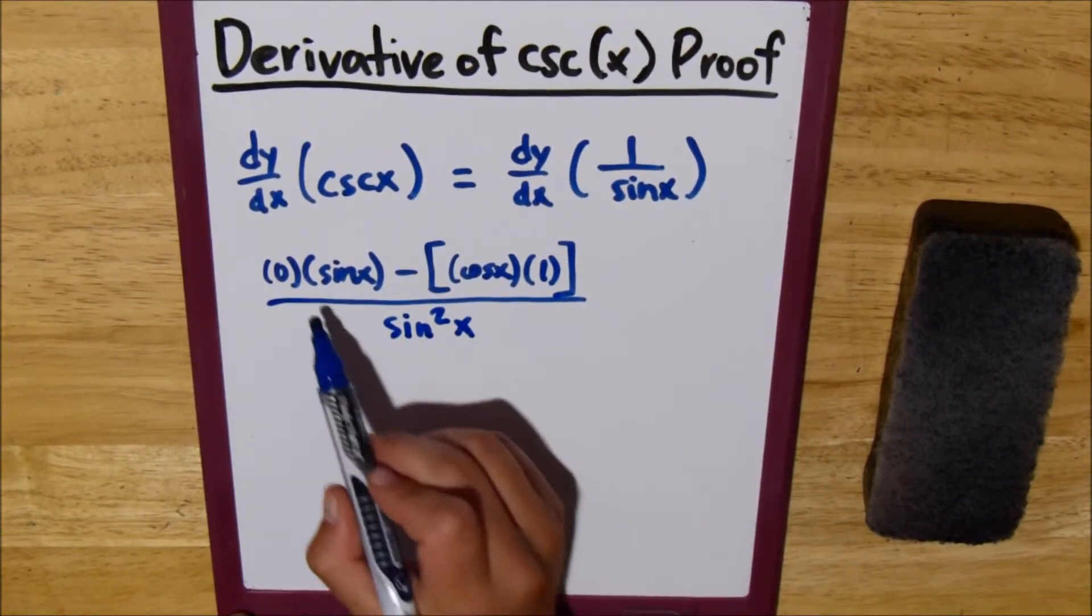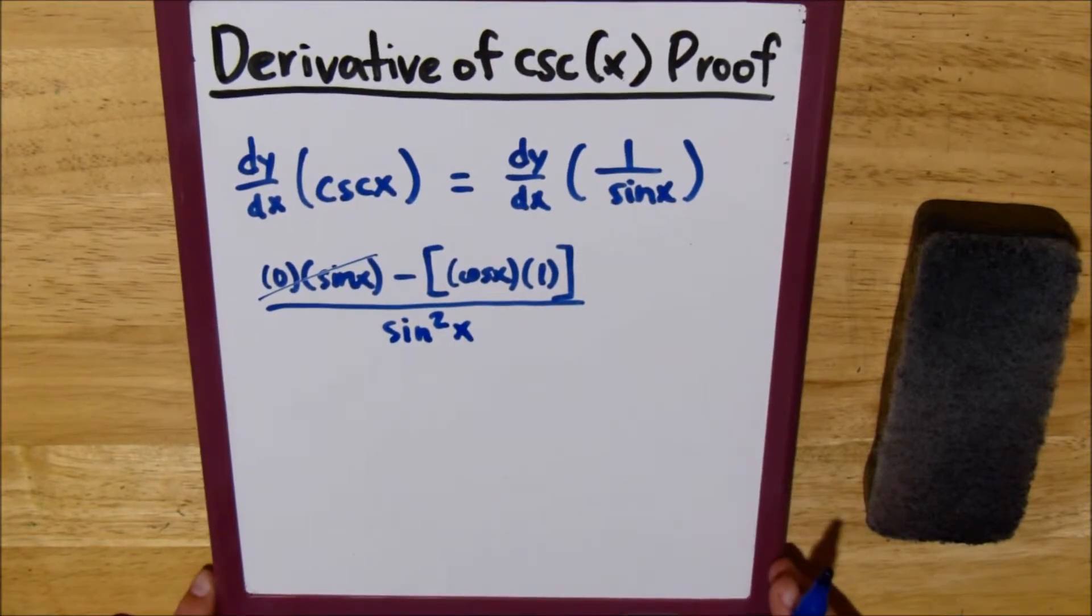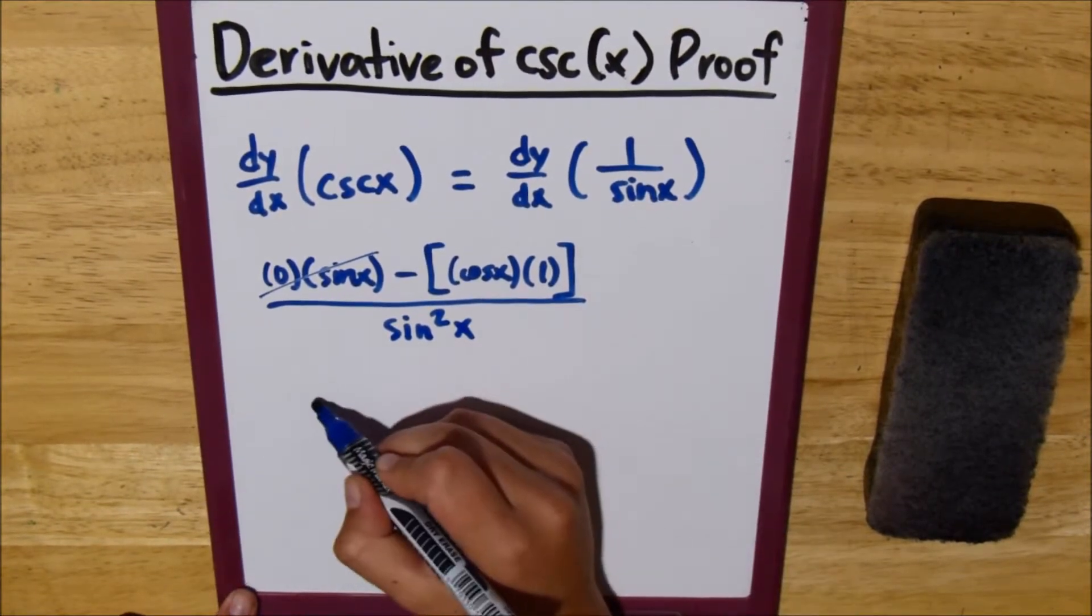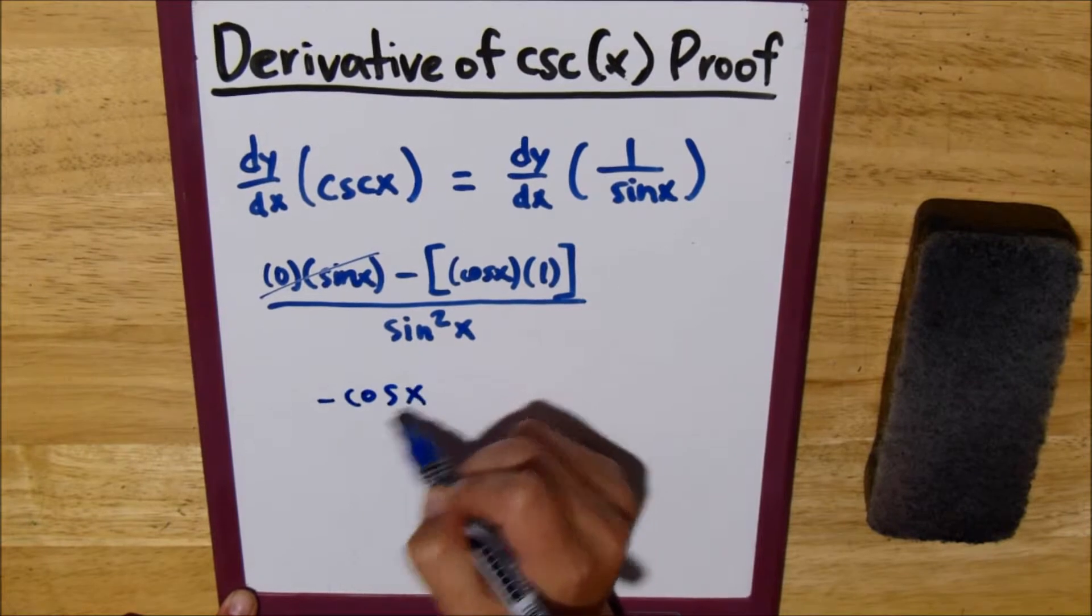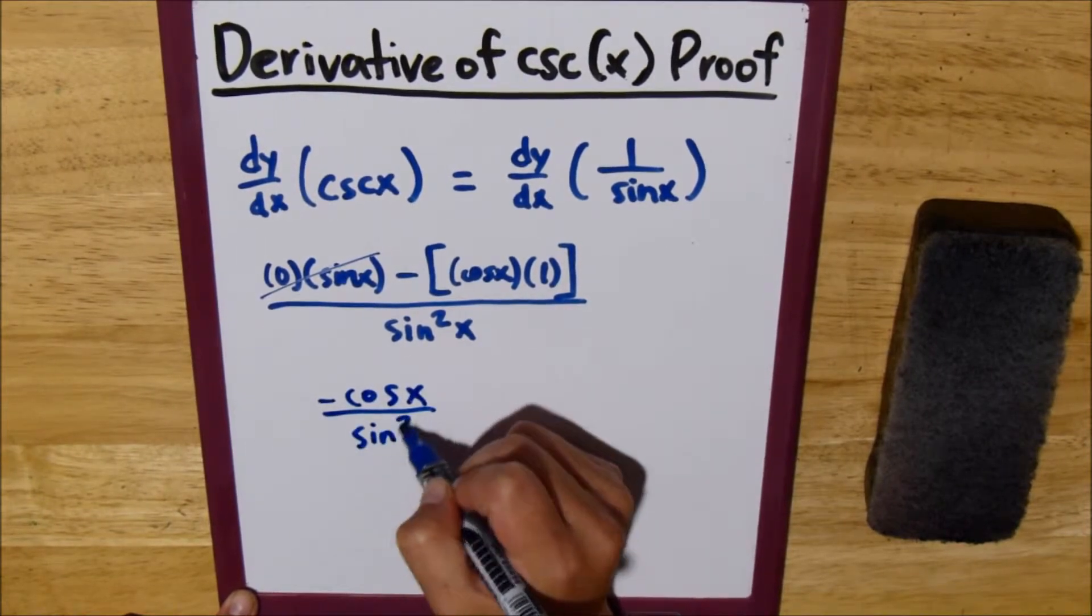And now, this just turns to 0 because anything times 0 is 0, so we end up with negative cosine of x over sine squared x.